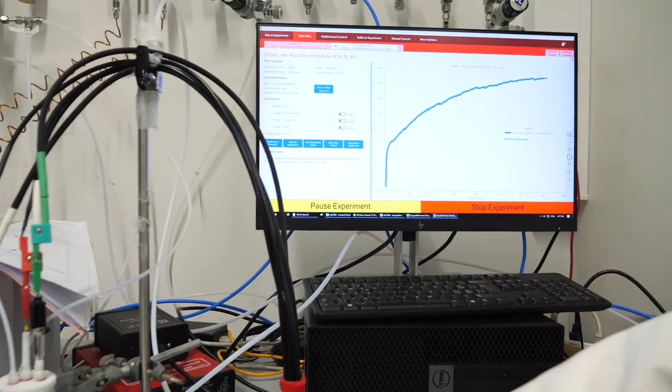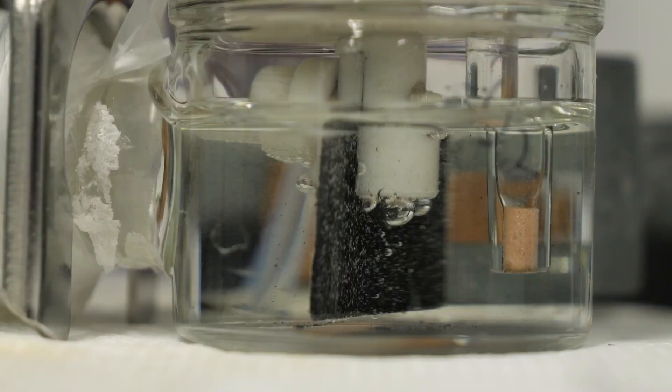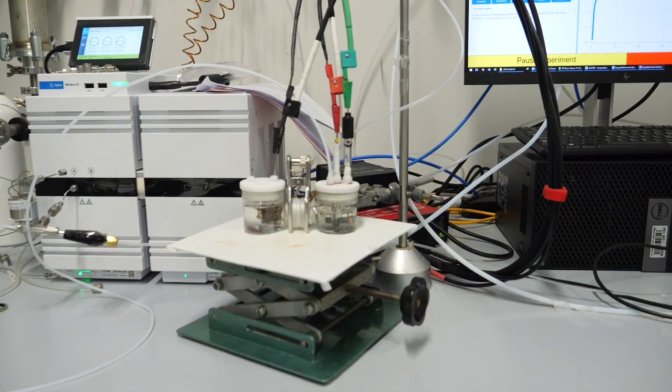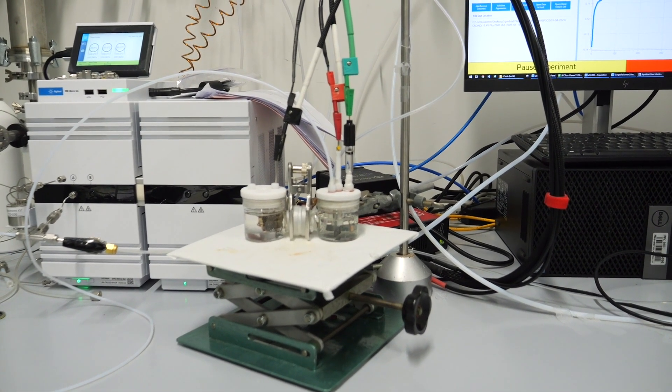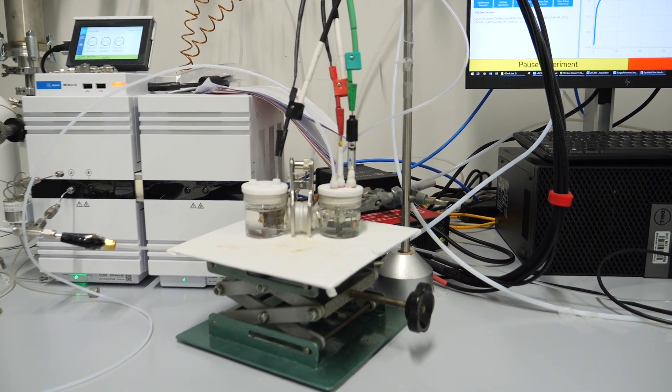In this setup, the CO2 will be reduced to different chemicals. For example, now we are reducing CO2 to CO, but it's also possible to reduce to different chemicals like methanol, ethanol, methane, ethylene, and different others.